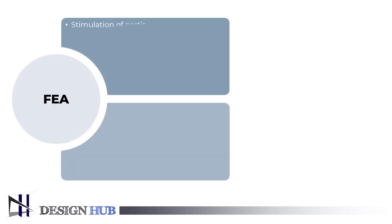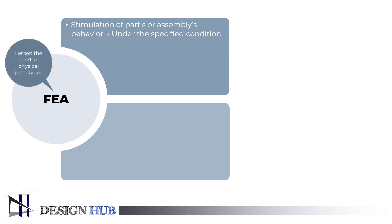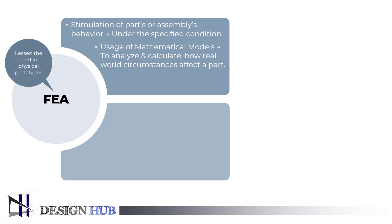Finite element analysis, FEA, is the process of simulating a part's or assembly's behavior under specific conditions so that the finite element method can be used to evaluate it. Engineers use FEA to simulate physical phenomena and lessen the need for physical prototypes while enabling component optimization as part of a project's design process. FEA makes use of mathematical models to analyze and calculate how real-world circumstances affect a part or assembly.